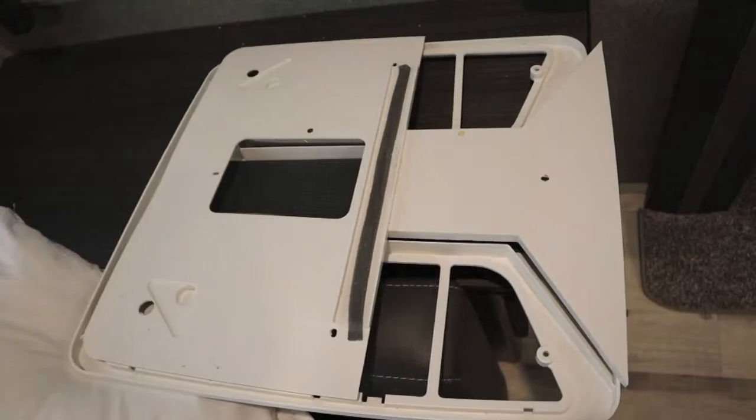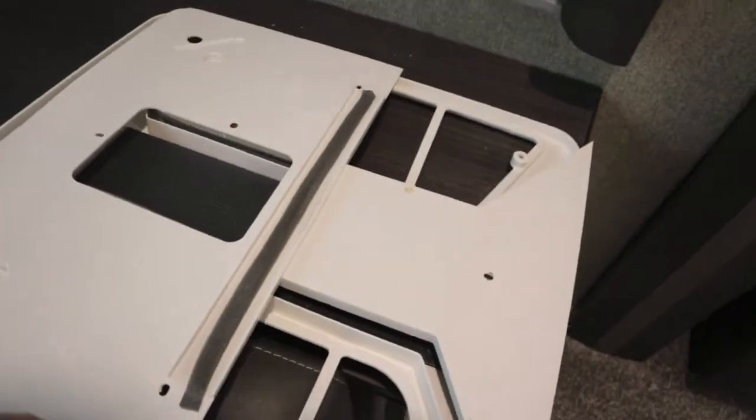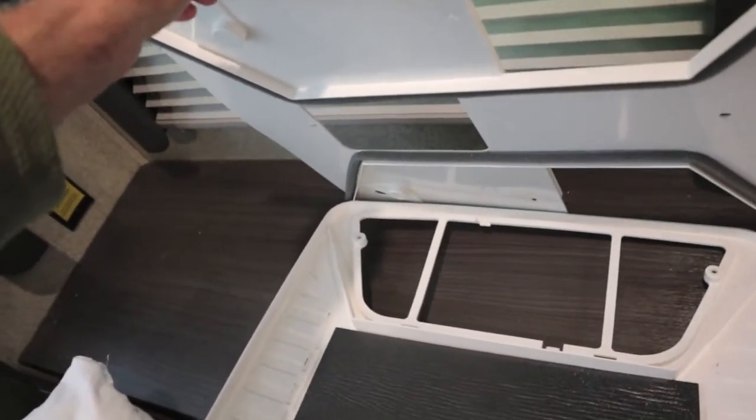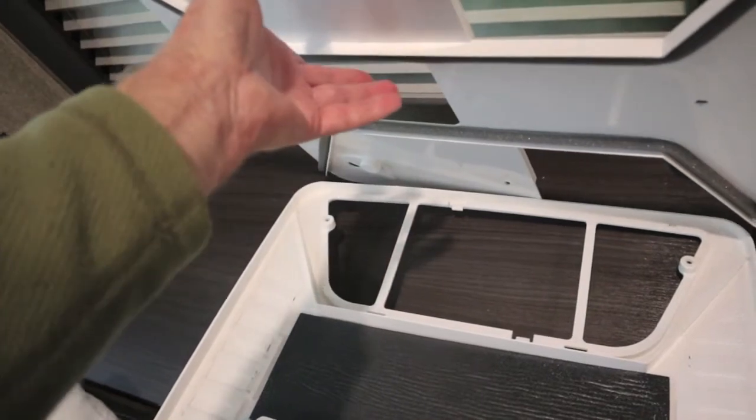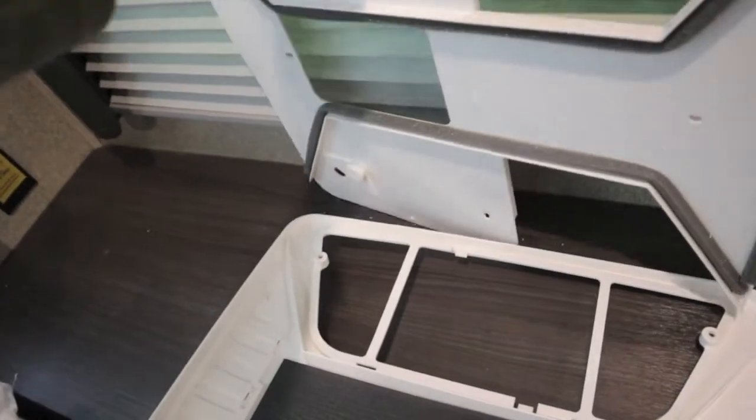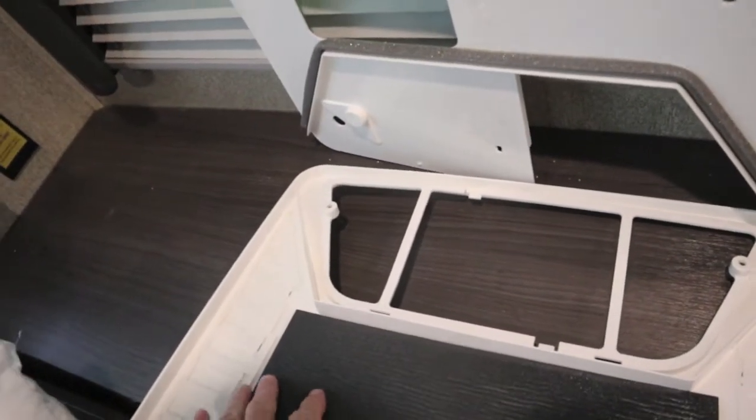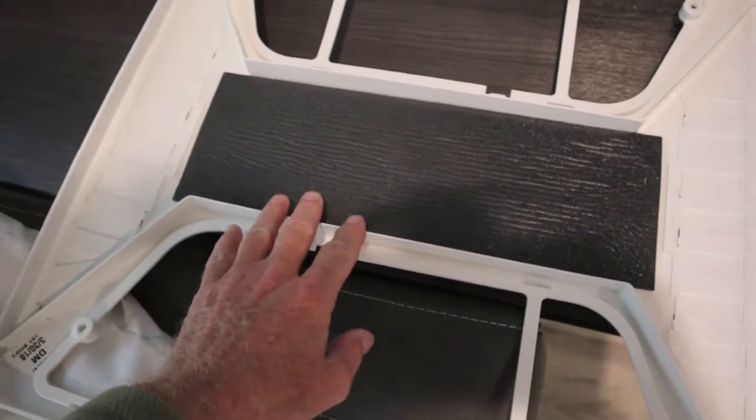After removing my cover, by the way it's a Coleman Mach 15K unit, the RV airflow plenum that goes in there keeps the air from just coming down here and jamming into this wall, coming through here and then jamming into this, and being distributed out into the vents. We'll go up there and take a look at the vents.